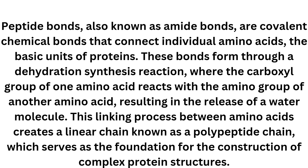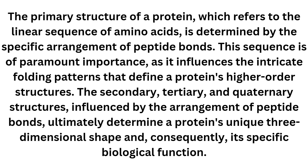This linking process between amino acids creates a linear chain known as a polypeptide chain, which serves as the foundation for the construction of complex protein structures. The primary structure of a protein — the linear sequence of amino acids — is determined by the specific arrangement of peptide bonds. This sequence influences the intricate folding patterns that define a protein's higher-order structures: the secondary, tertiary, and quaternary structures.